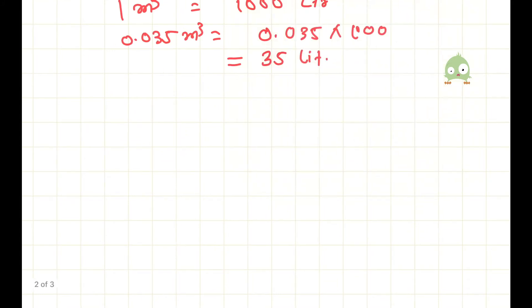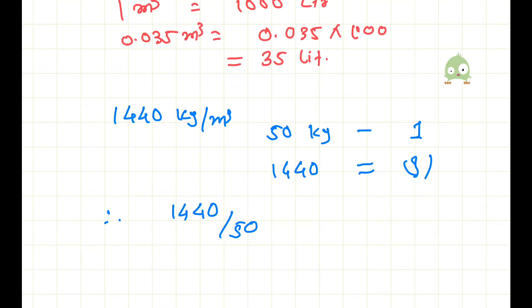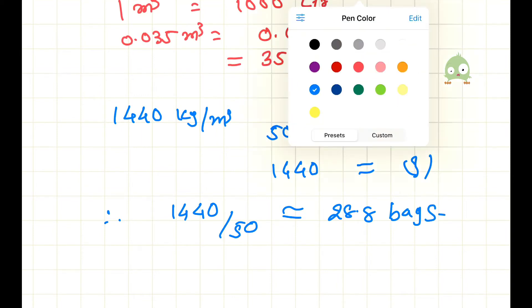The density of cement is 1440 kg per meter cube. For 50 kg, the number of bags is 1. So for 1440 kg, how many bags are required? The answer is 1440 divided by 50, which equals 28.8 bags. This is the answer to the third question.